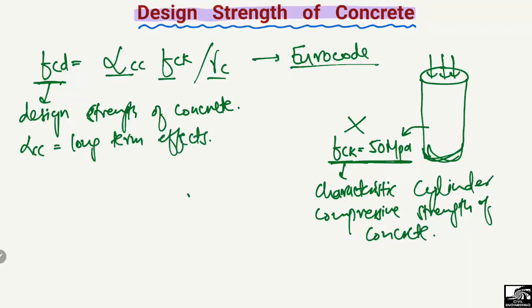The factor αcc considers the long-term effects on the compressive strength of the concrete and the durability effects. This factor is assumed to be 0.85 in the Eurocode.